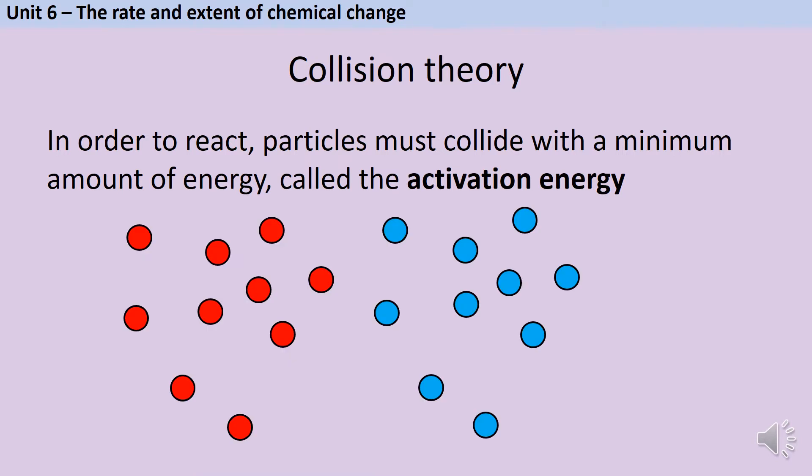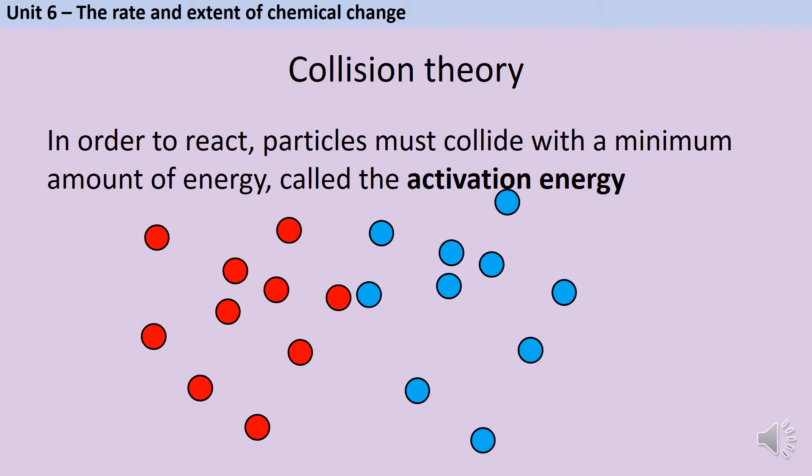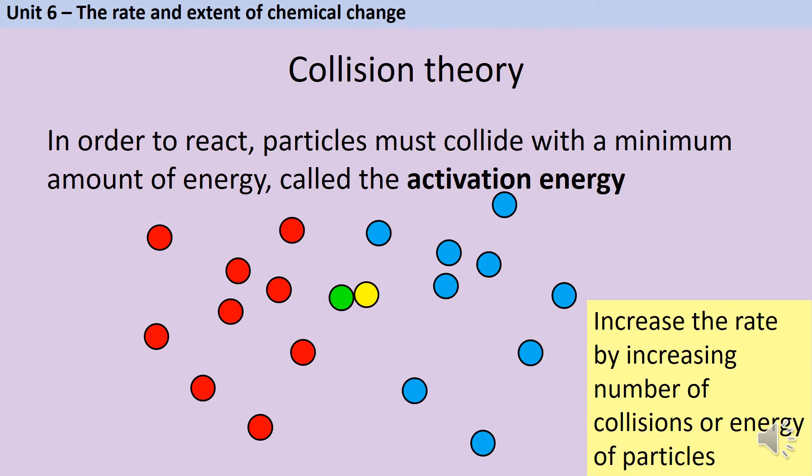Here we can see those particles moving randomly until they collide and if they have enough energy react. In order to increase the rate of reaction we need to either increase the number of collisions or increase the energy of particles so that more of the collisions that do happen are successful.